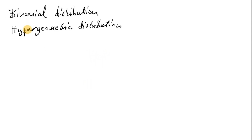We have previously seen examples of probability distributions, such as the binomial distribution and the hypergeometric distribution. Here we will focus mainly on a distribution called the normal distribution.